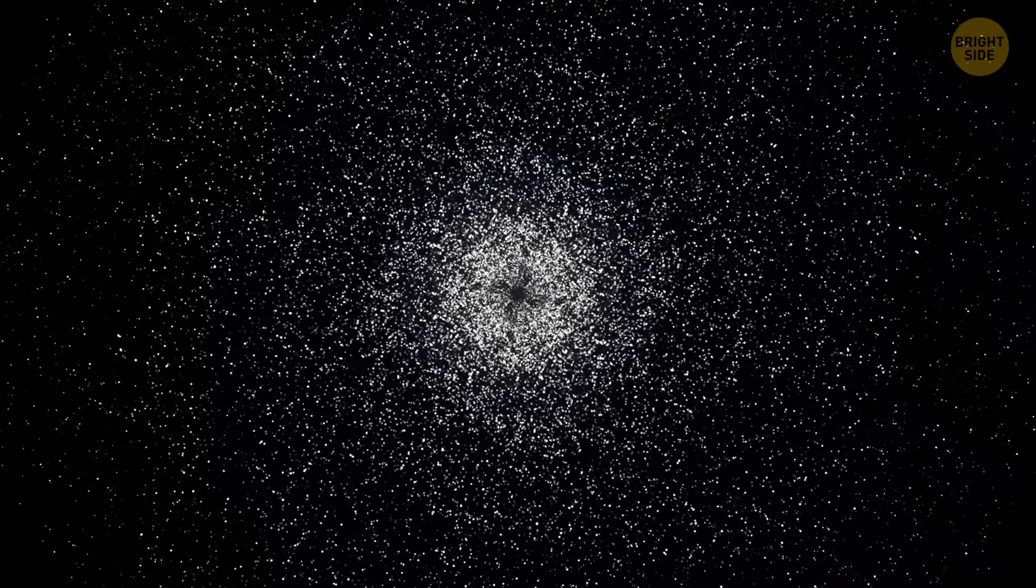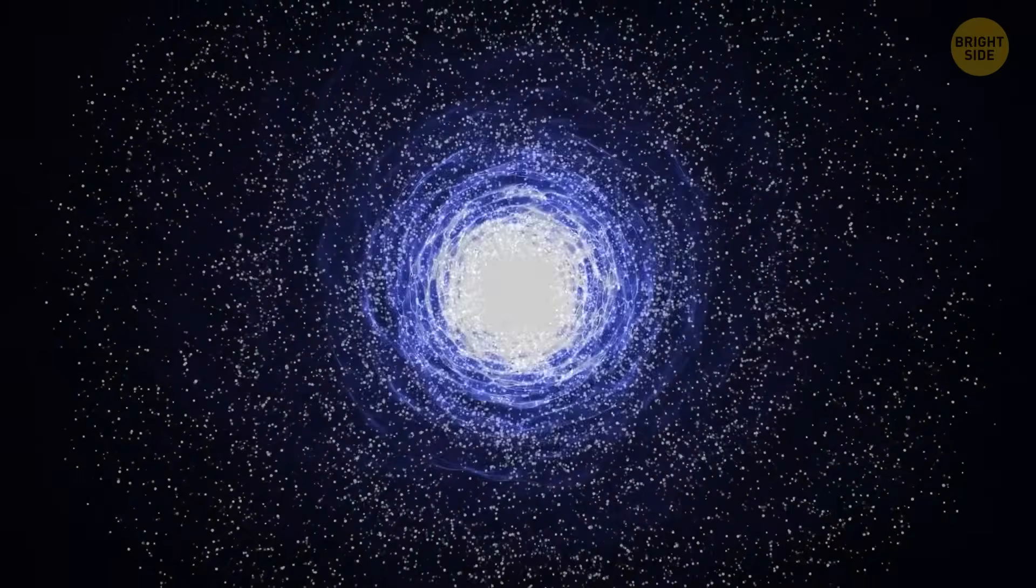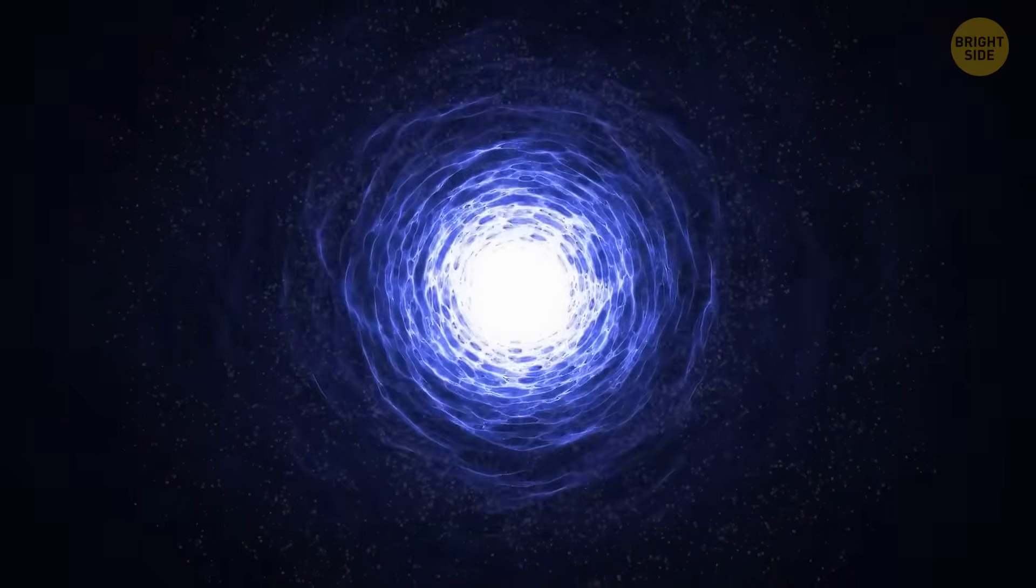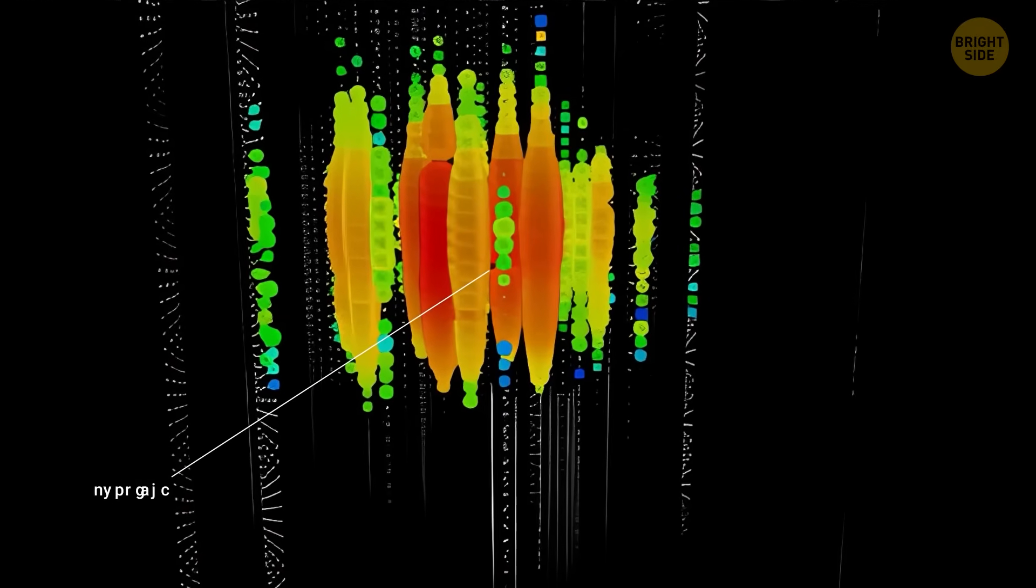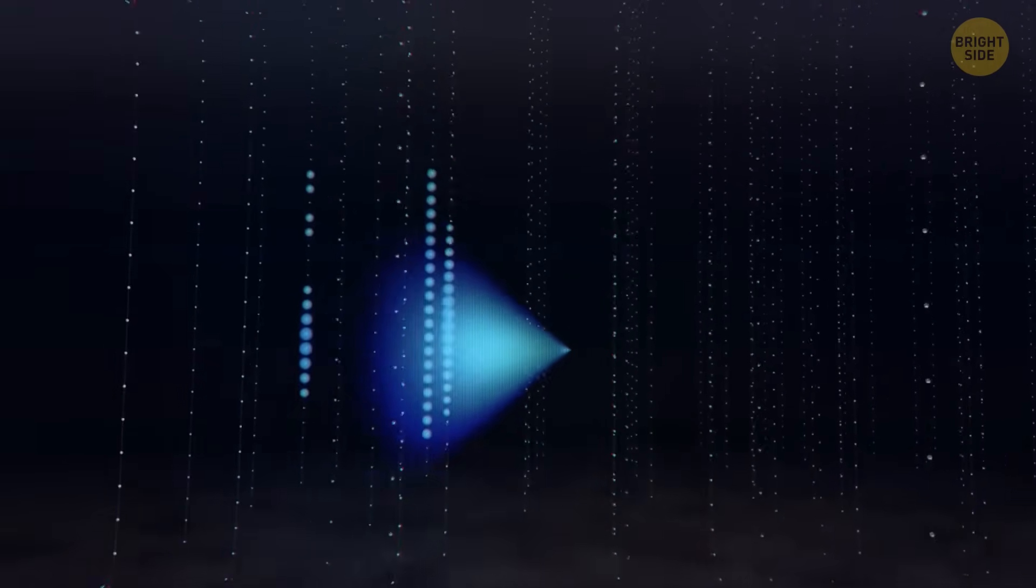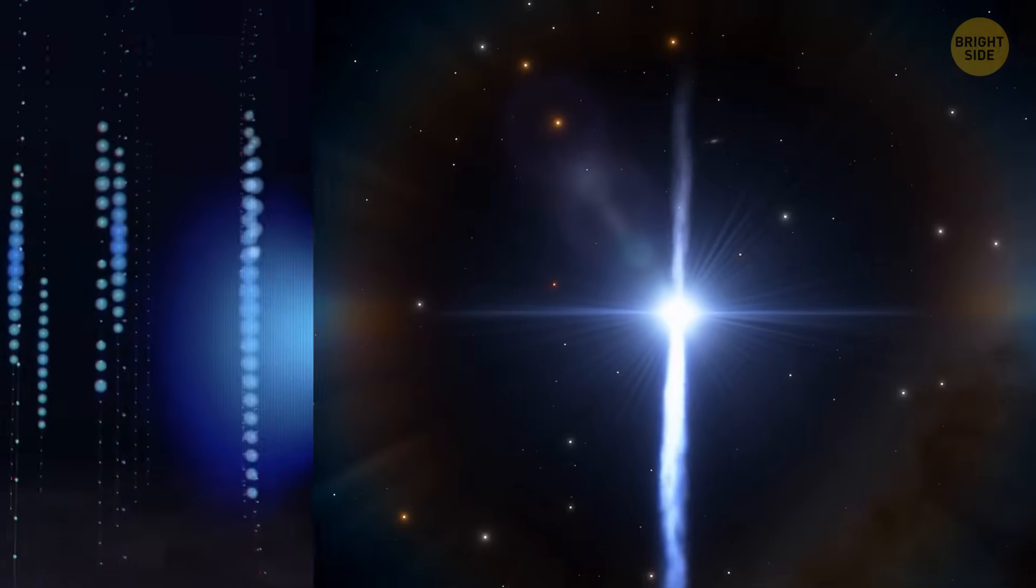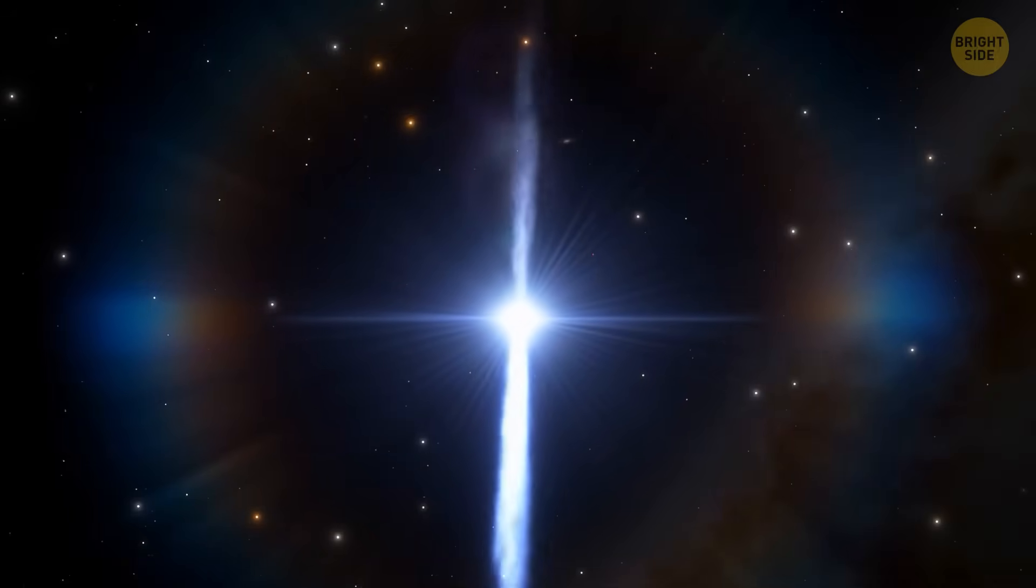Since it became fully operational in 2010, IceCube has already made some groundbreaking discoveries. It detected the first high-energy astrophysical neutrinos, proving that these particles come from outside our galaxy. In 2018, IceCube pinpointed a high-energy neutrino source to a blazar, a galaxy with a supermassive black hole at its center, shooting out jets of particles.